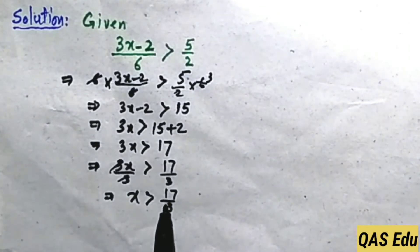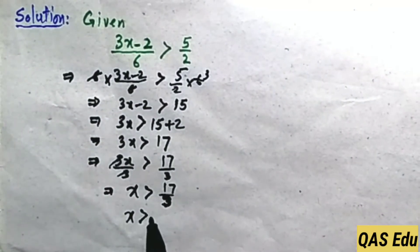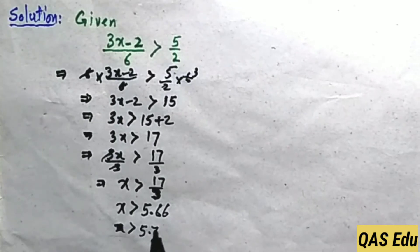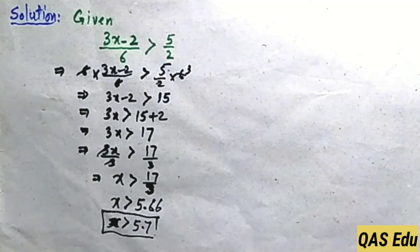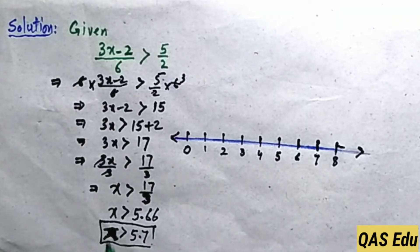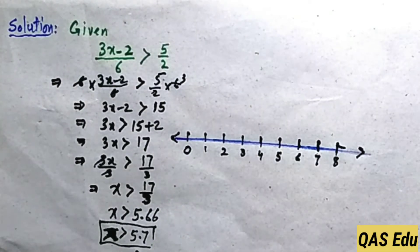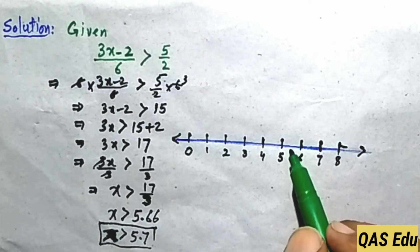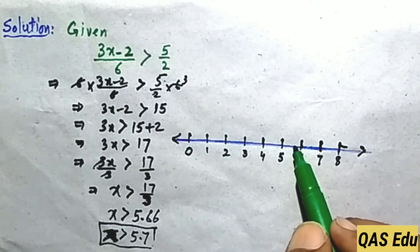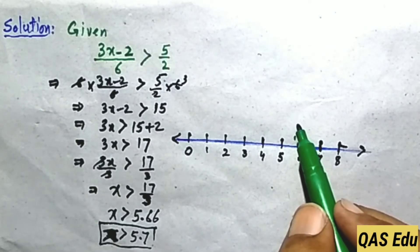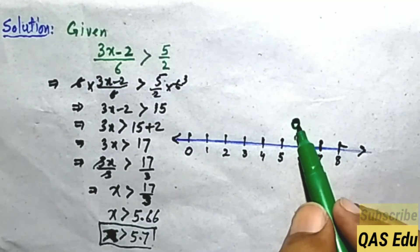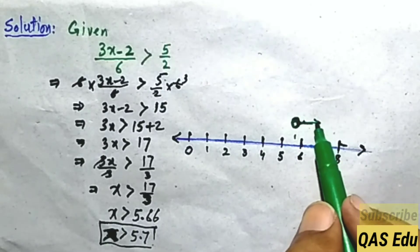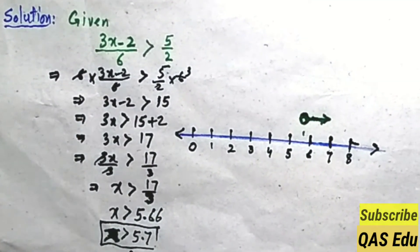17 divided by 3 gives approximately 5.66, which we round to 5.7. So x is greater than 5.7. Since 5.7 is not included, draw an empty circle at 5.7. Since x is greater than 5.7, draw an arrow pointing to the right. This shows the solution set for the inequality x is greater than 5.7 on the number line.